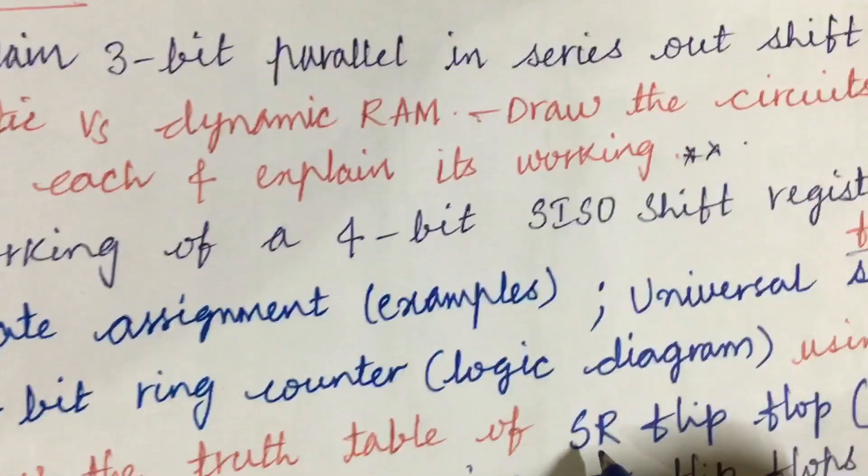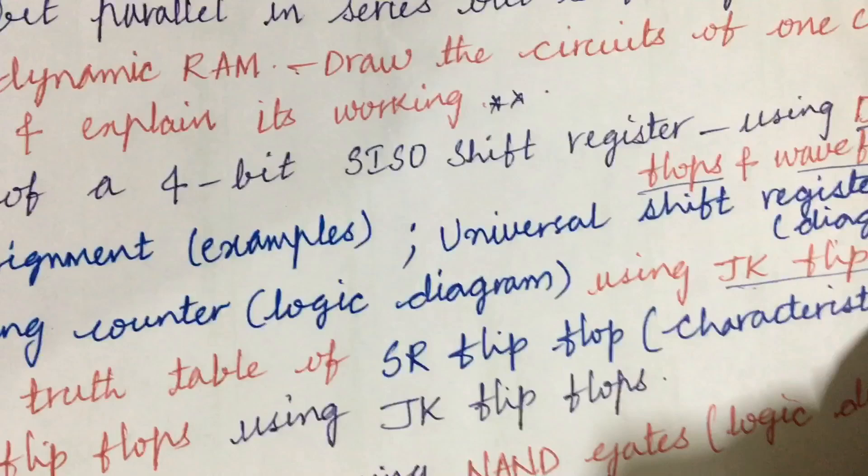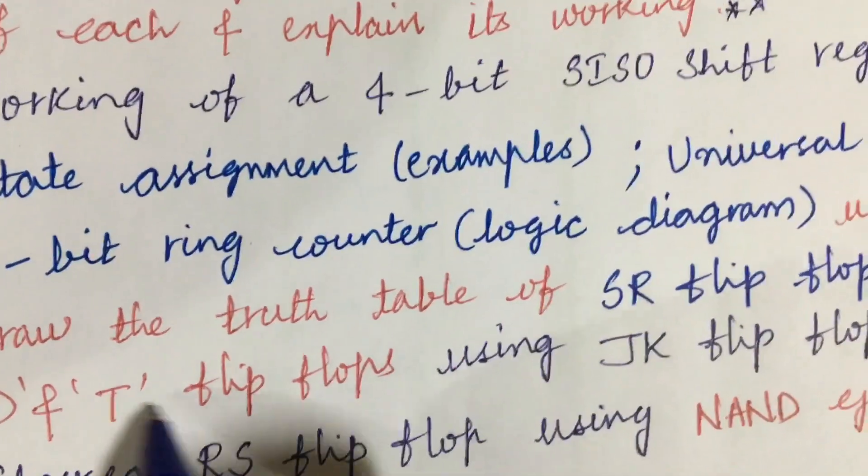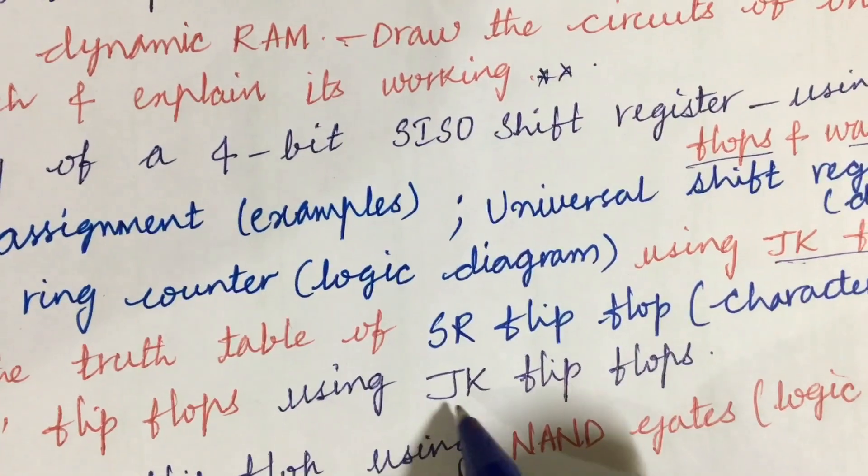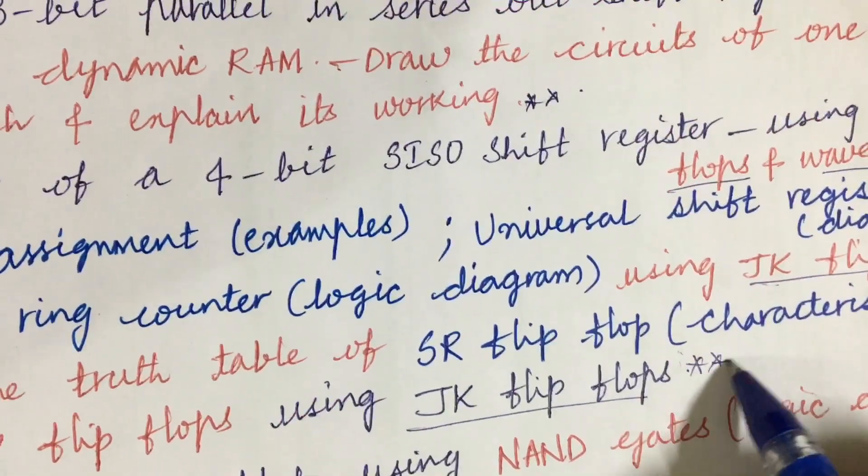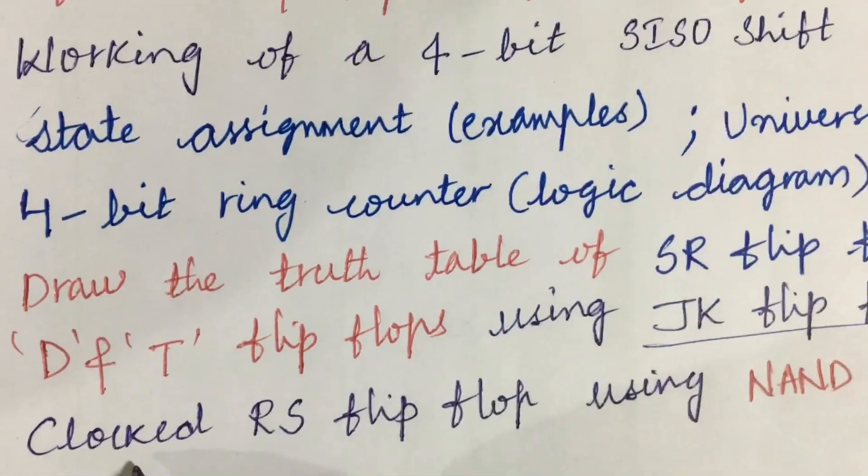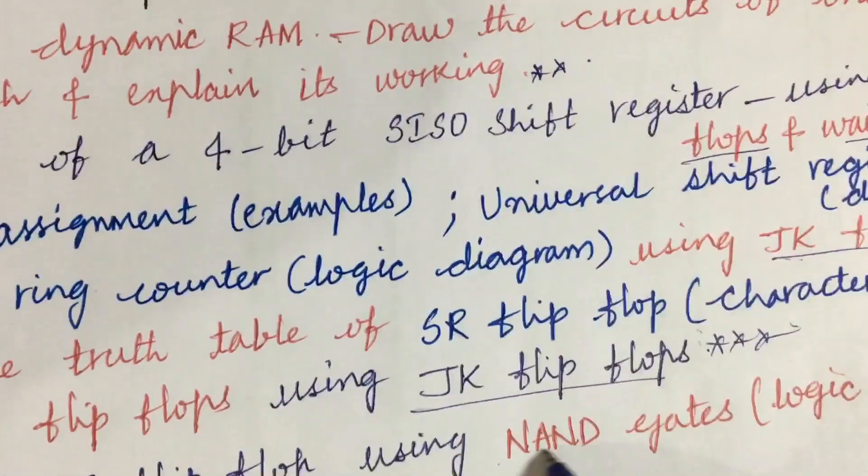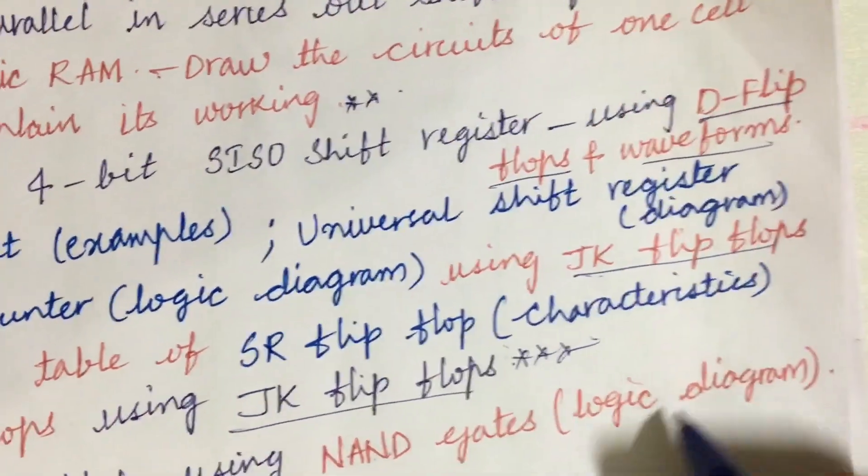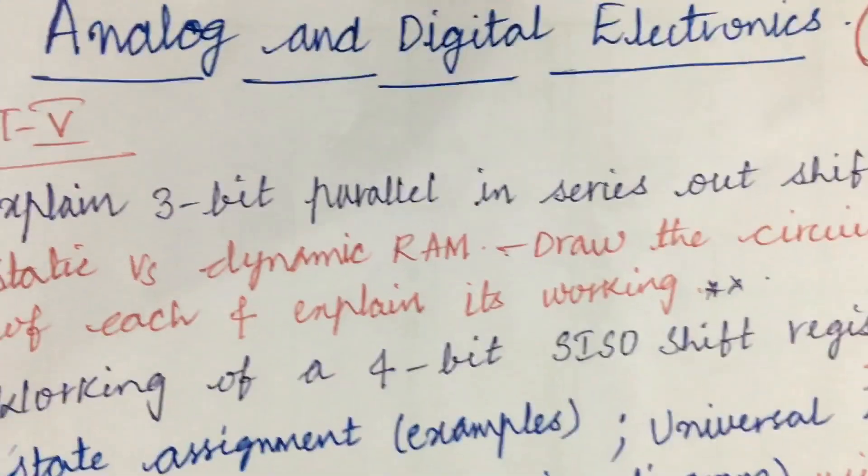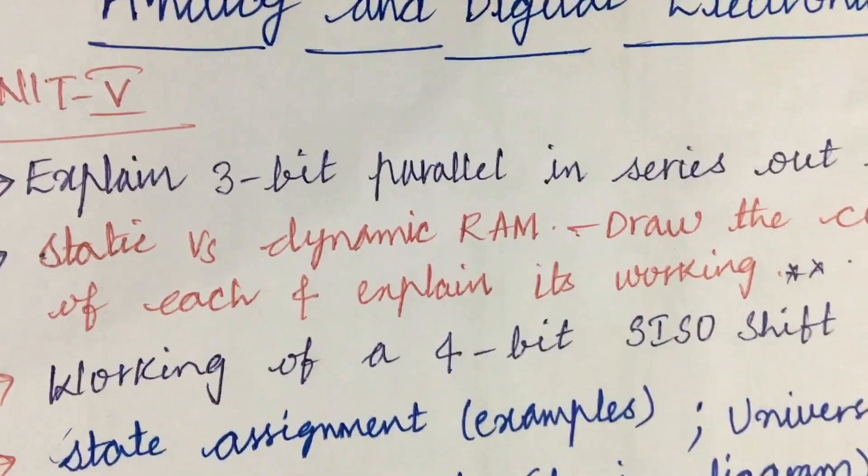Draw the truth table of SR flip-flop and its characteristics, as well as D and T flip-flops using JK flip-flop. Related to JK flip-flop you can expect a gunshot question in the question paper. Clocked RS flip-flop using NAND gates logic diagram—these all are the important questions related to unit 5 where you are going to get this as an eighth question.